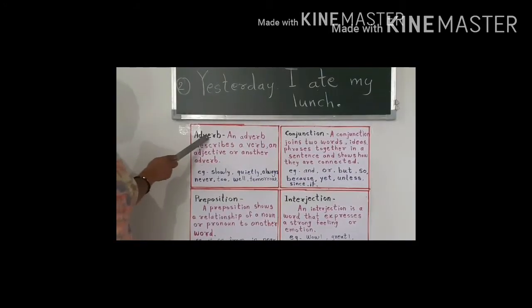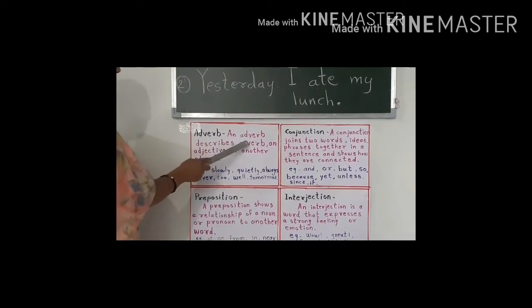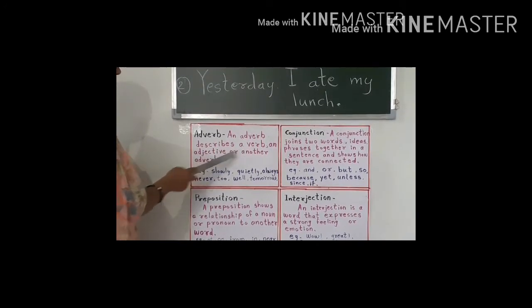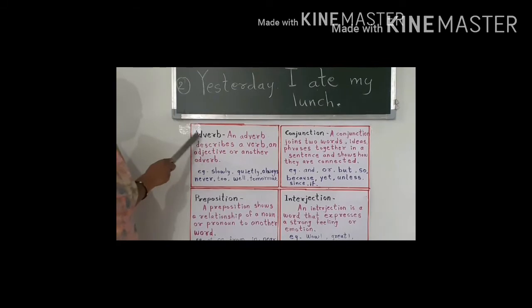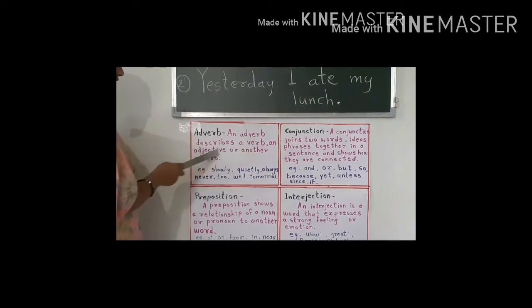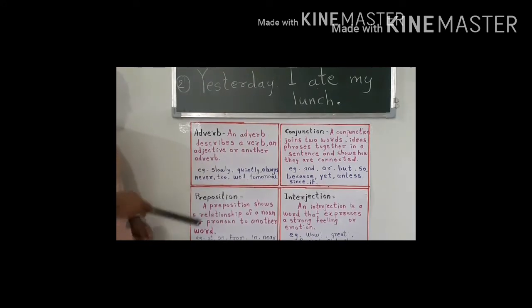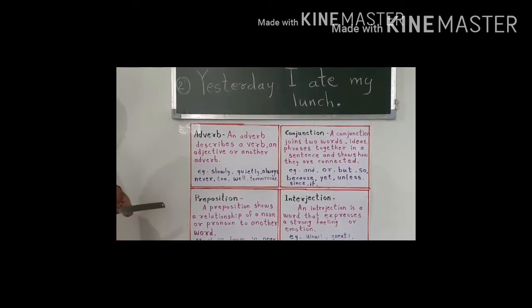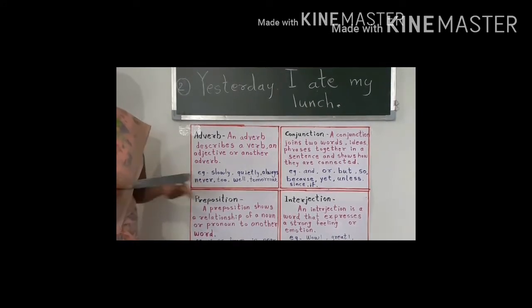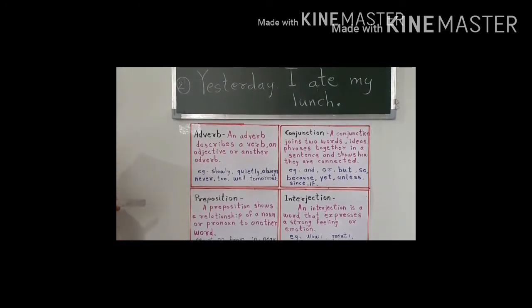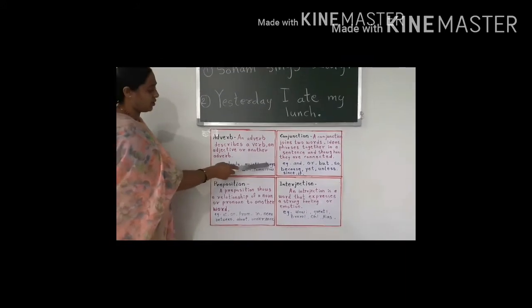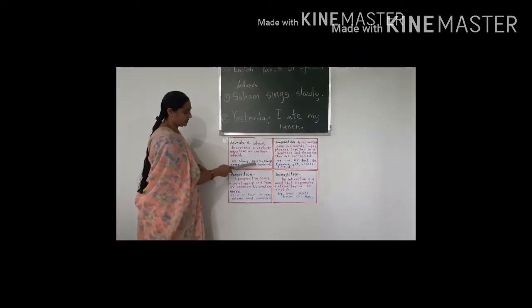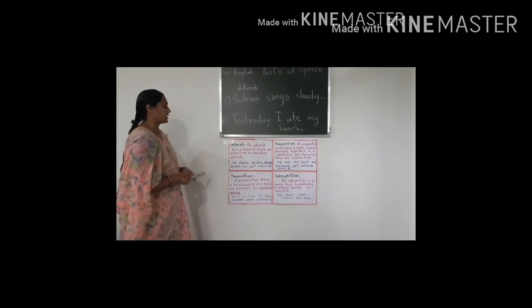The next part of speech is adverb. An adverb describes a verb, an adjective, or another adverb. It adds more information about a verb, adjective, or adverb in a sentence. It tells how, when, or how often the action is done or something has happened. Have a look at some examples of adverbs: slowly, quietly, always, never, too, well, tomorrow. All these words are examples of adverbs.